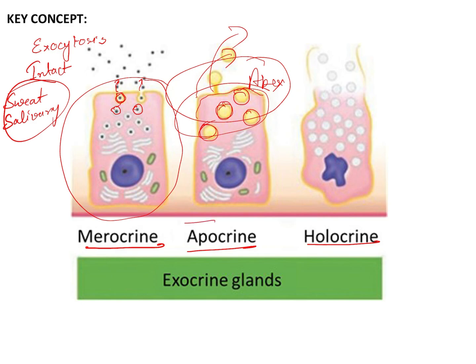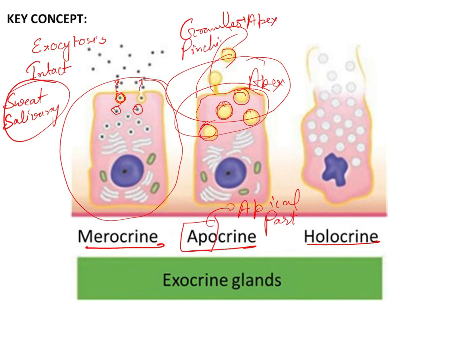In apocrine secretion, the apical part is pinched off or separated from the main cell, so the cell is not intact. The granules accumulate near the apex and there is pinching off of the apical portion of the cell. The whole cell is not intact; only the apical portion pinches off.